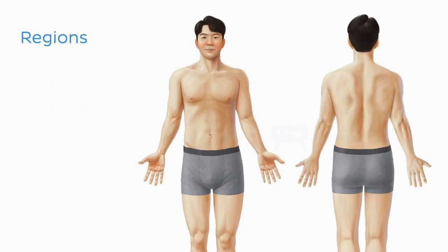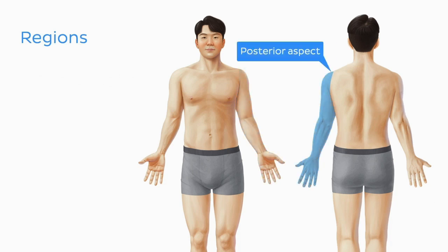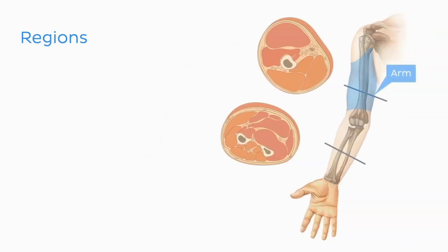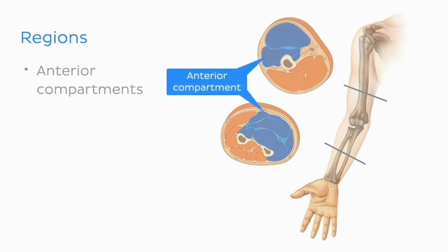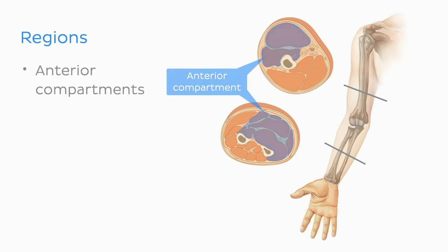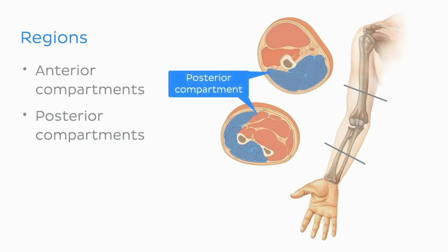Throughout its entirety, the upper limb is divided into anterior and posterior aspects based on the anatomical position. Furthermore, the arm, forearm, and hand are separated into anterior and posterior compartments by intervening fascia and a connective tissue intermuscular septum.